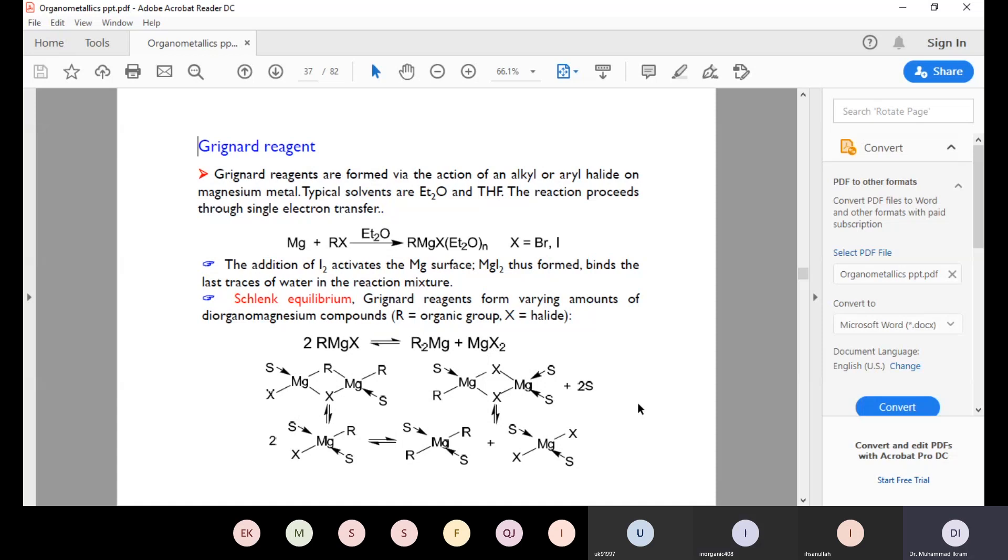The addition of iodine activates the magnesium surface. MgI2 thus formed binds the last traces of water in the reaction mixture. If there is water in the reaction mixture, then add iodine. This will remove the water from the reaction medium. This is a technique which ensures the inert atmosphere of the reaction.